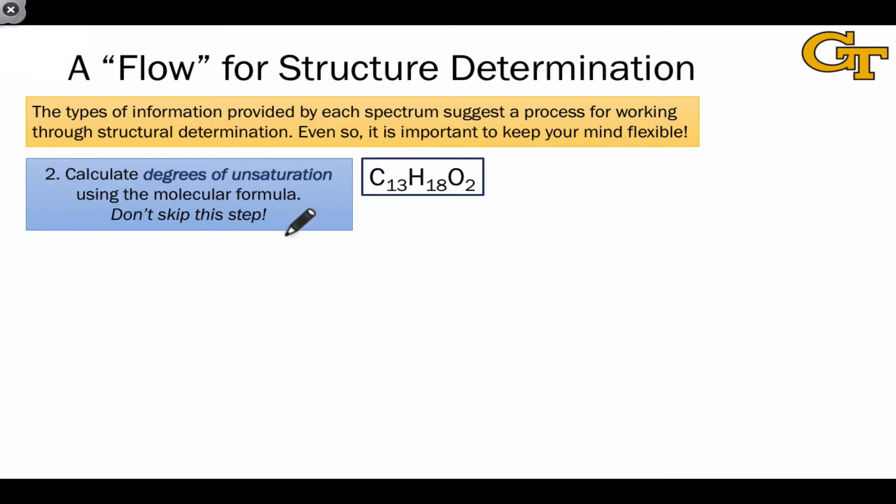Once you have the formula, you should actually move away from the spectra for a second and calculate what are called the degrees of unsaturation based on the formula. Degrees of unsaturation is based on the idea that every multiple bond or ring that we find within a structure means that we've subtracted two hydrogens from the alkane formula. For example, looking at this formula, we would expect the C13 alkane to contain 28 hydrogens, 2n+2, where n is the number of carbons.